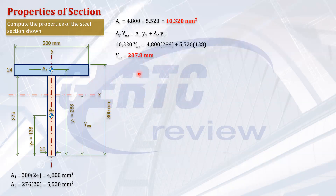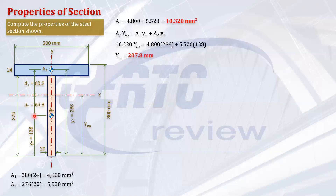Now let's compute the moment of inertia about the x-axis using the transfer formula. We need the distances from each area's centroid to the neutral axis. Distance d1 equals 288 minus 207.8, giving 80.2 mm. Distance d2 equals 207.8 minus 138, giving 69.8 mm.